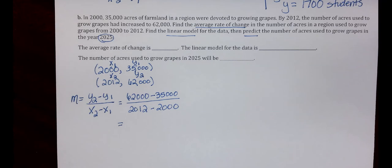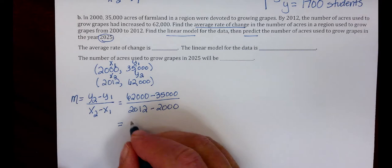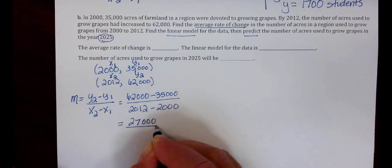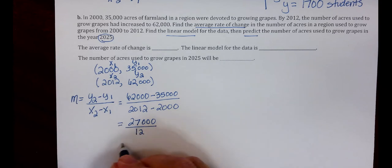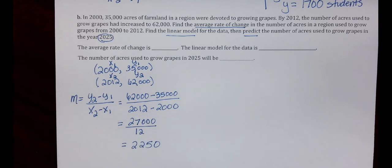62,000 minus 35,000 is 27,000 divided by 12, which gives us 2,250. And that is our slope we're going to use.